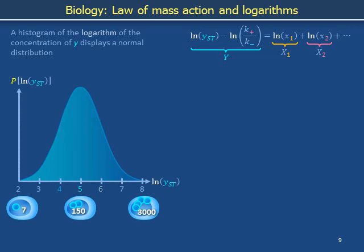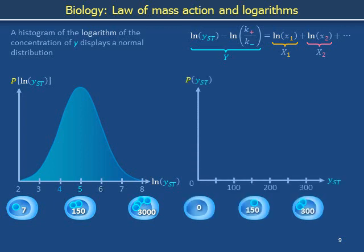Given the distribution for the natural log of Y_ST we have drawn to the left, what is the distribution for Y_ST itself plotted on a linear scale? Throw down a collection of manipulatives to provide a rough representation of the bell-shaped curve on the left. The 3 dark blue marbles at the left correspond to the position Y_ST equals e^4 minus e^4 in the plot to the right.